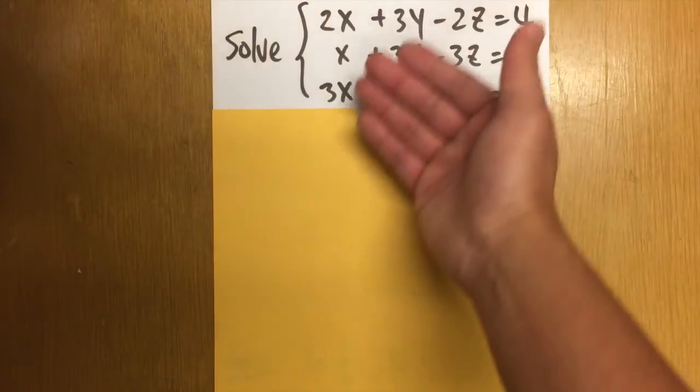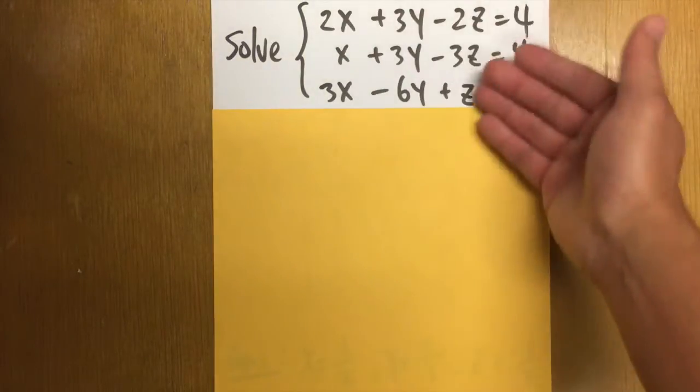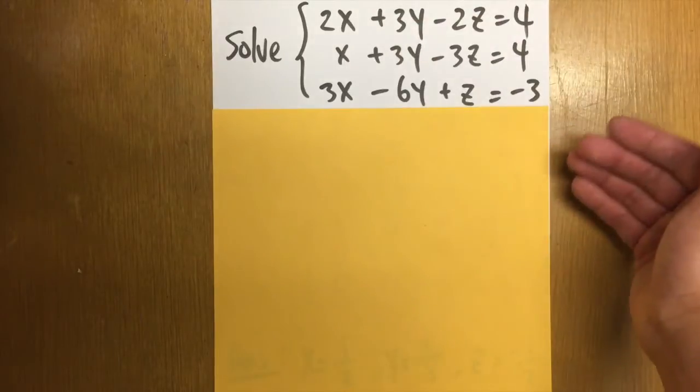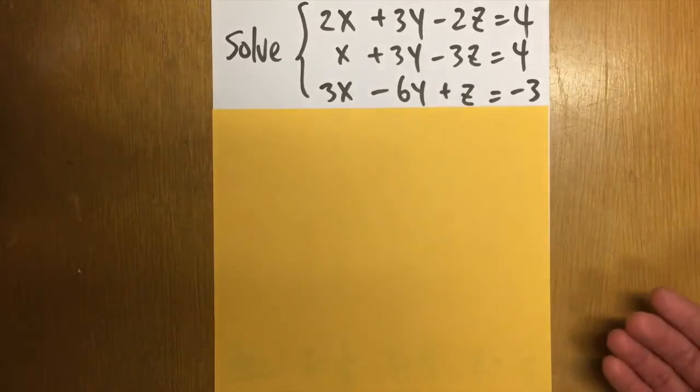And this is the system of equations that we have. It's a 3x3 system of equations because we have 3 unknowns and 3 equations. However, when we write this down as a matrix, we will end up with a 3x4 matrix.